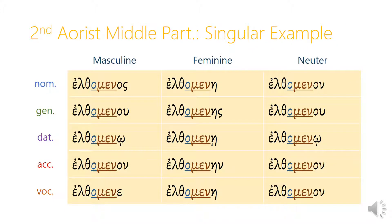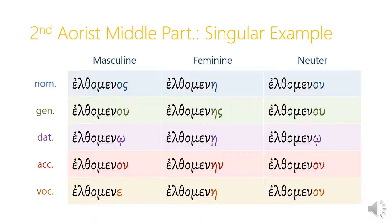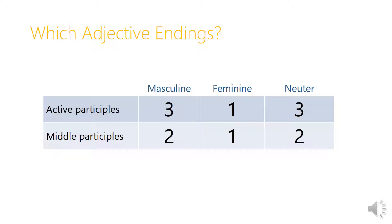For a second aorist middle example, we use the second aorist stem, the omicron connecting vowel, no sigma tense marker — all normal for second aorist — and the only change is using the men middle voice indicator right across the board, with second declension adjective endings for the masculine and neuter. To summarize which adjective endings to use: in the active, think 3-1-3 — masculine is third declension, feminine is first declension, neuter is third declension. If it's a middle participle, think 2-1-2 — masculine and neuter use second declension adjective endings, but the feminine still uses first declension. You can learn more about aorist participles in Mounce's Basics of Biblical Greek.